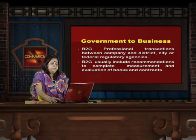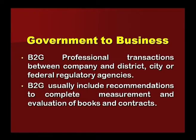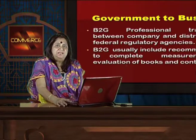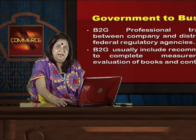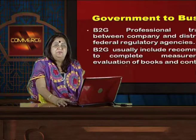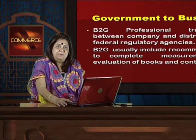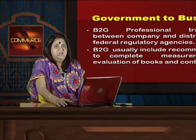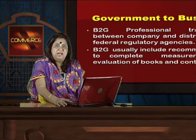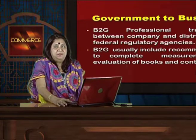Government to business (B2G) involves professional transactions between companies and district, city, and federal regulatory agencies. B2G usually includes recommendations to complete measurements, evaluation of books and contracts. Generally, it involves contracts signed with the government — taking licenses, doing registries, or getting permissions related to the establishment of companies, enforcing the company act, or coming into agreements related to judiciary and legal aspects. All these can now be fulfilled through online channels, which have become paperless and easy.